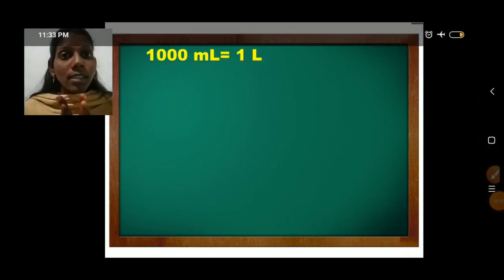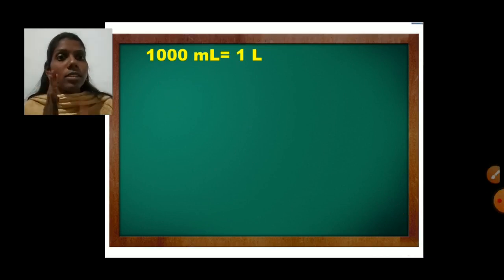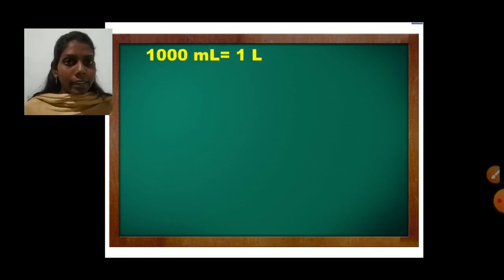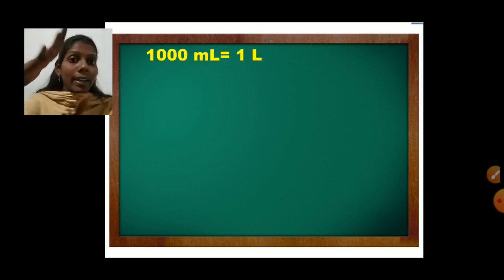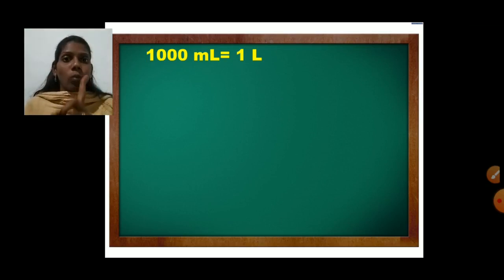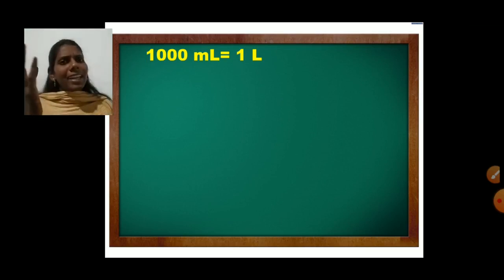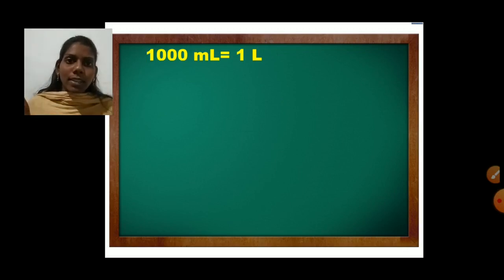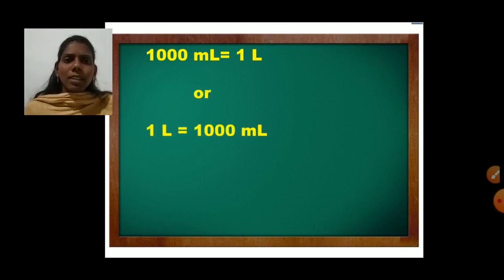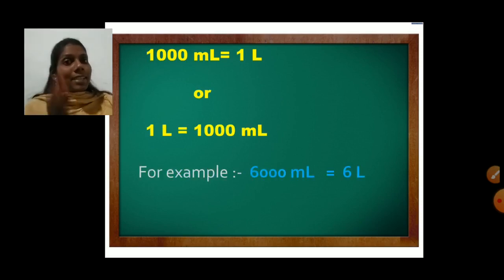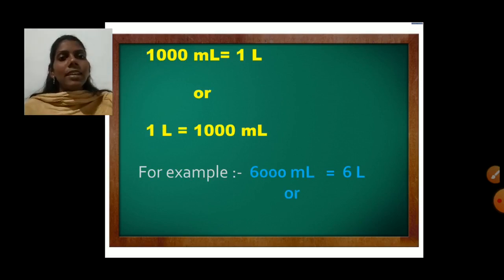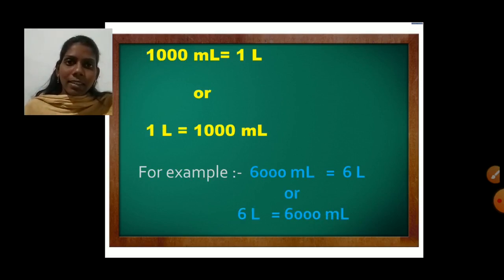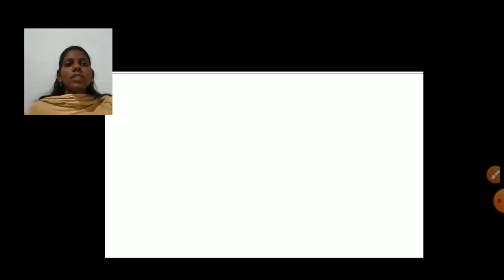1000 milliliters equals one liter. When 1000 milliliter of water is in a container, that means one liter of water is there. For example, 6000 milliliters equals six liters, or six liters equals 6000 milliliters.